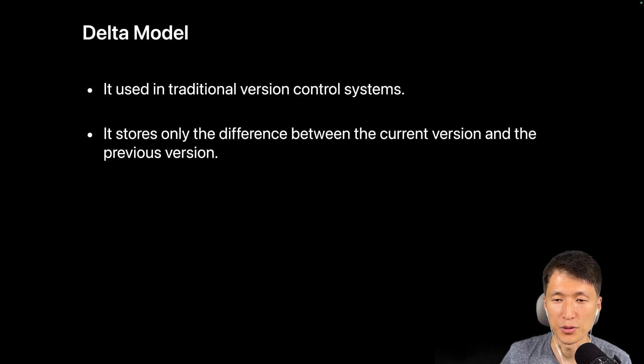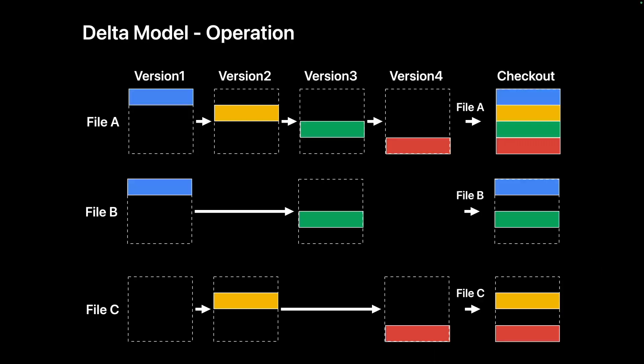The diagram illustrates how the delta model works. There are three files: File A, File B, and File C. Each time a file is changed, versions 1, 2, 3, and 4 are saved. Version 1 stores the original contents of the file — for example, the original contents of File A is saved in version 1. Subsequently, each change is recorded by saving only the modified parts.